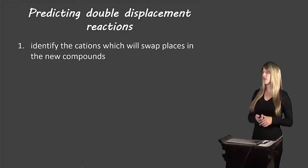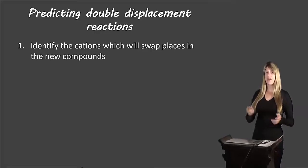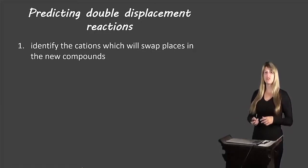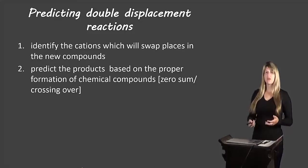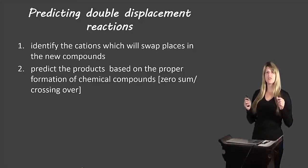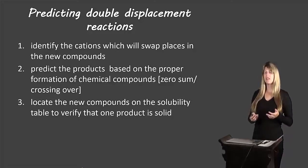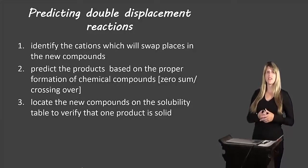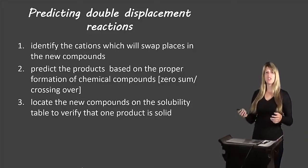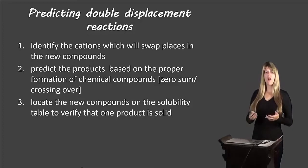So how do we predict double displacement reactions? First, you need to identify the cations that will swap places so we know which two new compounds are going to be formed. Then you predict the products of those compounds using the crossing-over or zero-sum rules. Then you locate those new compounds on the solubility table to verify that one of them will be a solid and the other is aqueous. If both of them are aqueous, then you have no reaction, and you write 'no reaction' or 'NR' on the other side of the arrow.